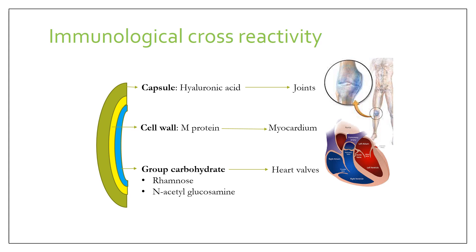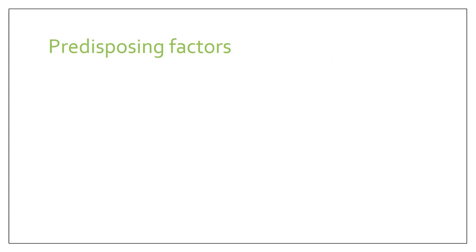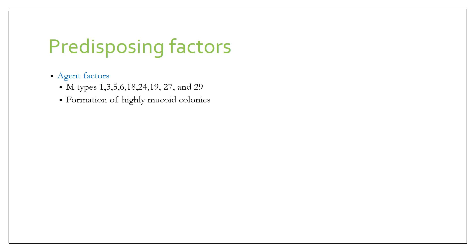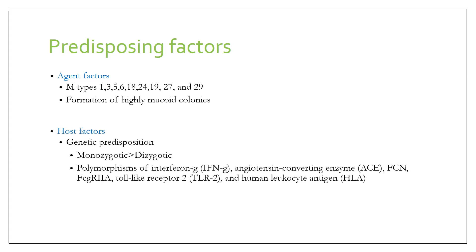The symptoms are mainly of the joints and the heart. In the heart there is pancarditis, which we will see later. The myocardium and heart valves have major cross-reactivity with the group A beta-hemolytic streptococcal cell wall. The agent factors are the M types of bacteria: M types 1, 3, 5, 6, 18, and 24, though the IAP also mentions M types 19, 27, and 29. These are known as M types because they form highly mucoid colonies. There is also genetic predisposition — monozygotic twins are affected more than dizygotic twins — and poverty and crowding are environmental factors which predispose a child to developing acute rheumatic fever.